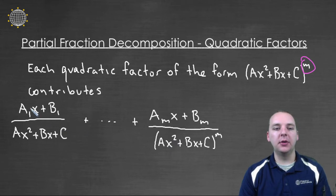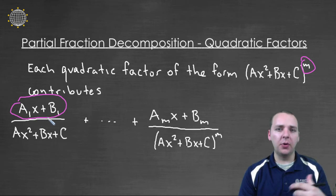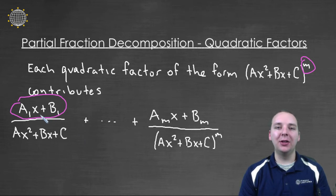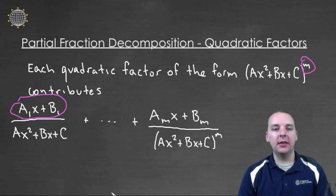But here's the big difference though. Look at these numerators. These numerators are not constants like they were when we had linear factors like A, then B, then C, or we called it A sub 1, A sub 2, A sub 3, A sub 4, etc. They're actually entire linear expressions. Now one way you can remember this difference is the fact that the numerator has a degree one less than the denominator.